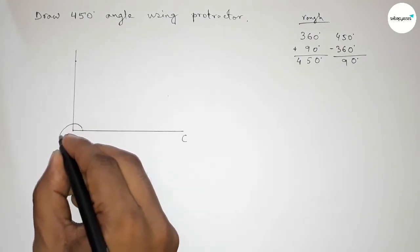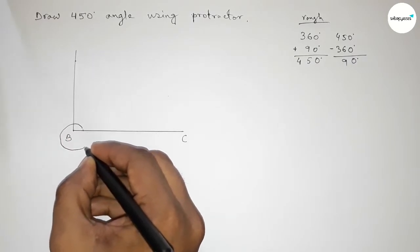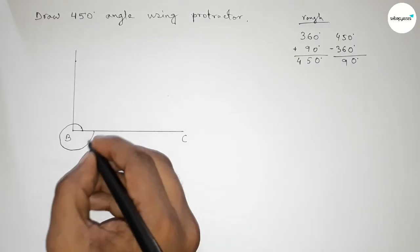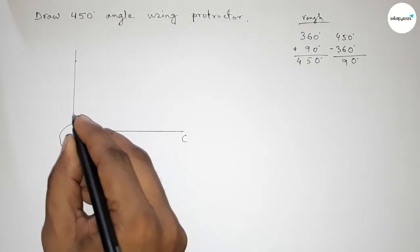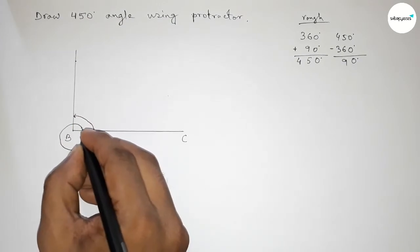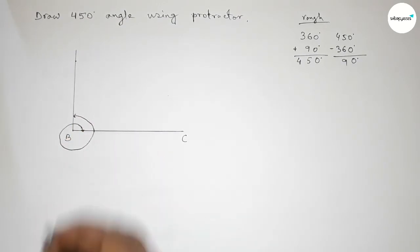First drawing 360 degree angle, so this is from this point to this, so this is total 360 degree angle. And taking 90 degree angle, so this is total 450 degree angle.